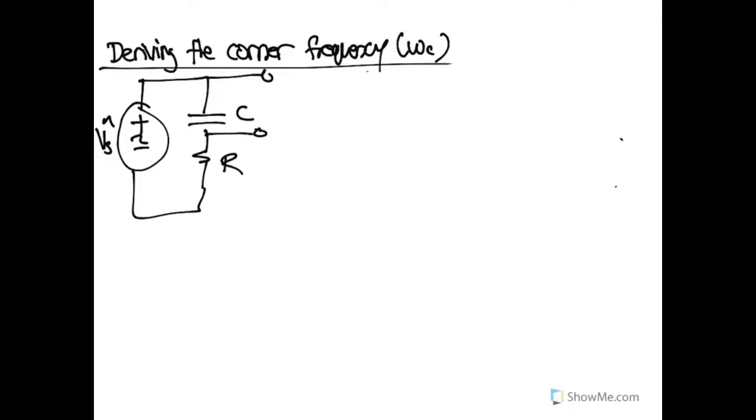So previously, we looked at what happens when you measure the voltage across the capacitor, and you end up with a low-pass filter, and we found that the transfer function for this particular low-pass filter was equal to 1 over 1 plus jωCR.